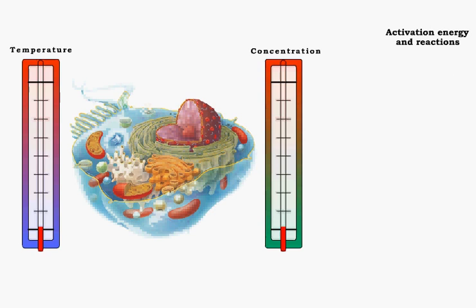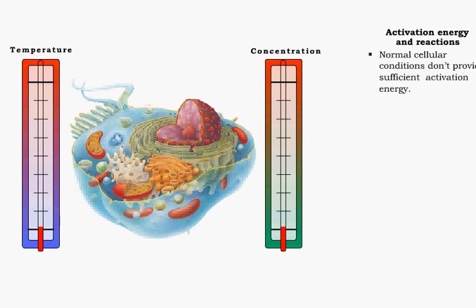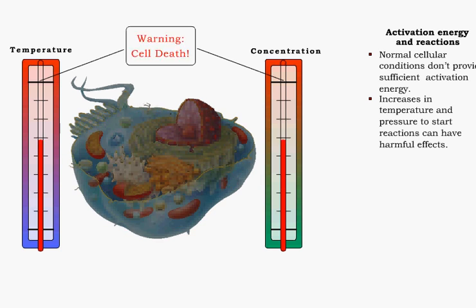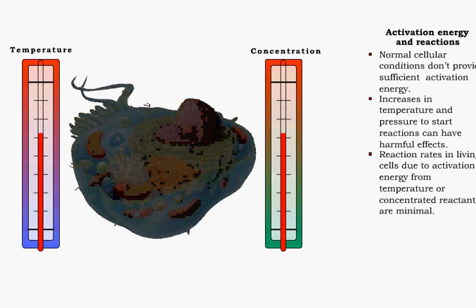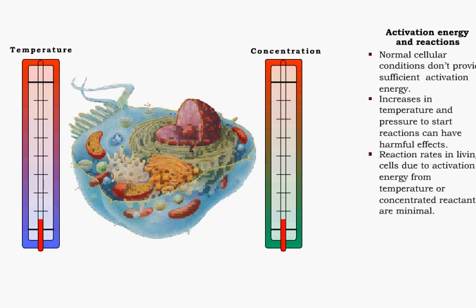In a living cell, normal temperatures and pressure from concentrated reactants are too low to provide the activation energy needed to break strong covalent bonds. Increases in temperatures or pressure are not consistent with cellular homeostasis and can lead to cell damage or death. As a result, changes in these factors within a cell are small and reaction rates are only slightly accelerated.